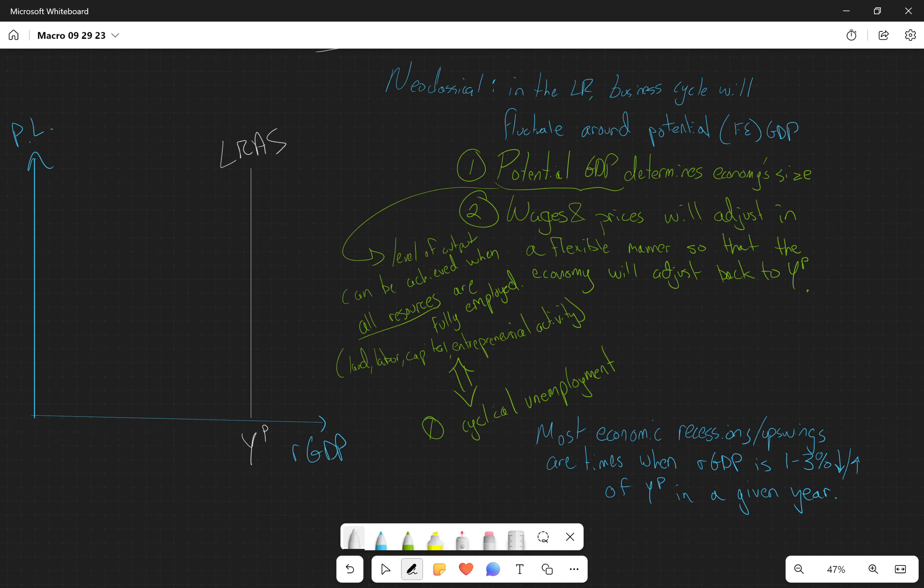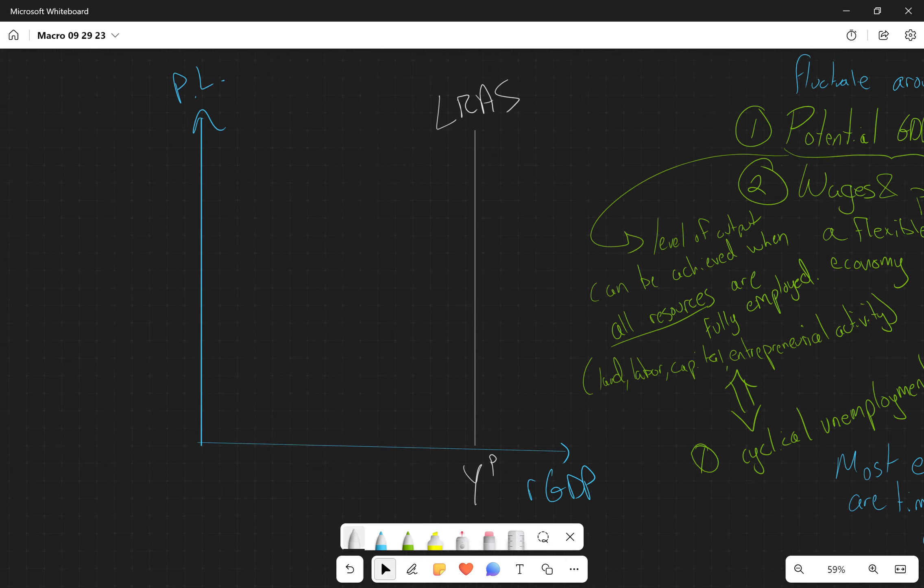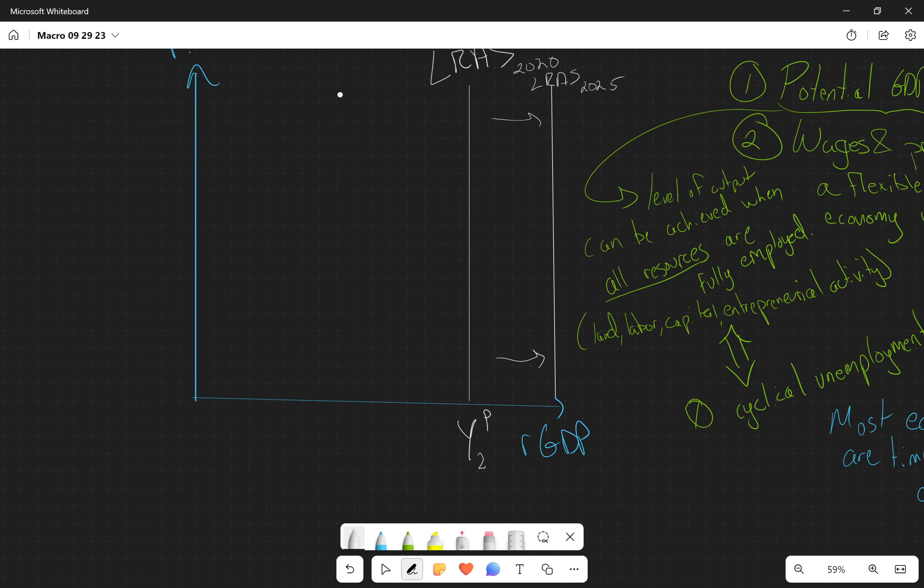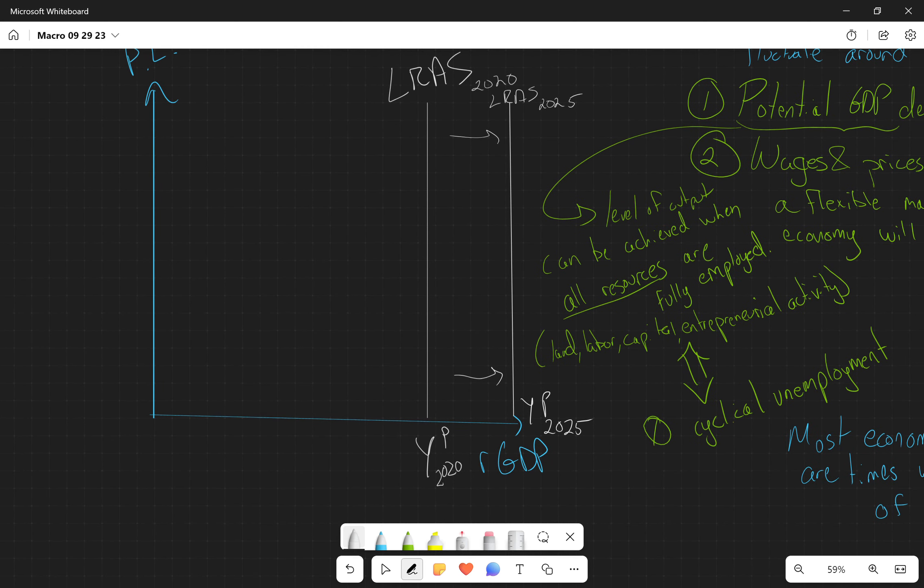Now, over time, we do find that this long run aggregate supply curve, this might be the one for 2020. And then over time, this shifts to the right as there's more laborers, there's better human capital, there's more capital that's produced. So this would be the long run aggregate supply curve of 2025. So over time, this thing shifts to the right. And this would end up being our YP of 2020, and then this would be corresponding to our YP of 2025. So productivity increases, capital accumulation increases, human capital accumulation increases. And as a result, this shifts to the right, potential GDP expands.